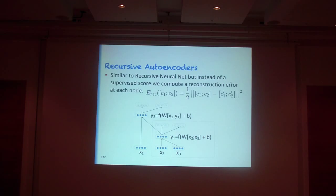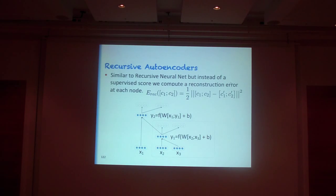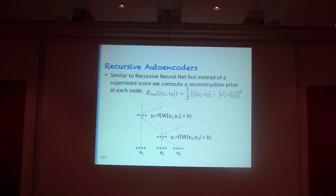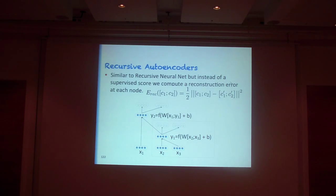We said you're a good node in a tree if the score is high, because we knew what syntactically correct trees look like. Here, the idea is that we say it's a good parent vector representation of a phrase if we can actually reconstruct the children vectors. If you can reconstruct them well, that means the parent hasn't lost all the information that was in the children. Just like with the autoencoder described in part one, we now have this kind of autoencoder at every node of the tree.